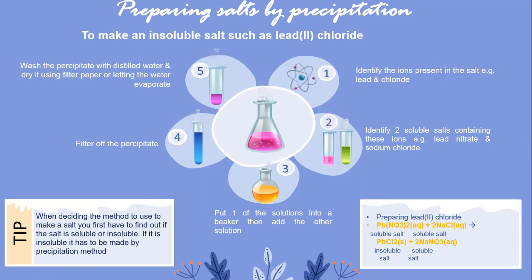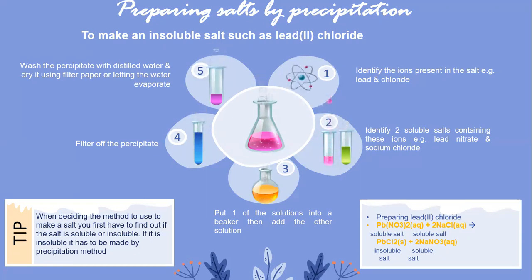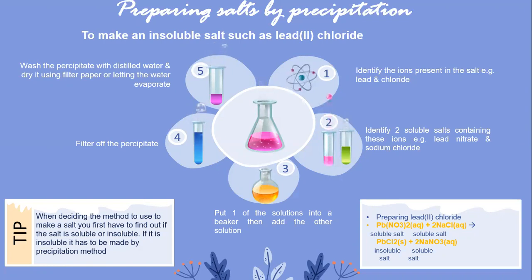Step 3: put one solution into a beaker and add the other solution. Step 4: filter off the precipitate. Step 5: wash the precipitate with distilled water and dry it using filter paper or by letting the water evaporate. The equation for preparing lead chloride is: Pb(NO3)2 + 2NaCl → PbCl2 (insoluble) + 2NaNO3 (soluble).